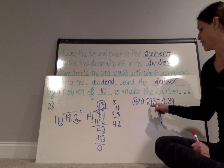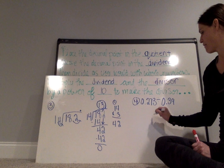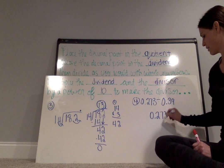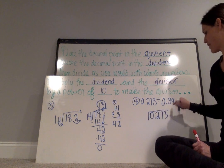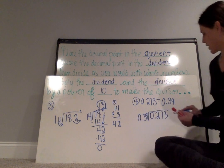In my next problem, 0.273 divided by 0.39. So again, my first number is going to be my dividend divided by my second number, which is my divisor.